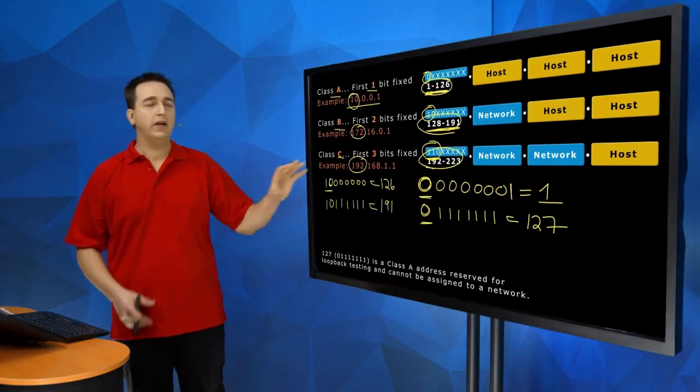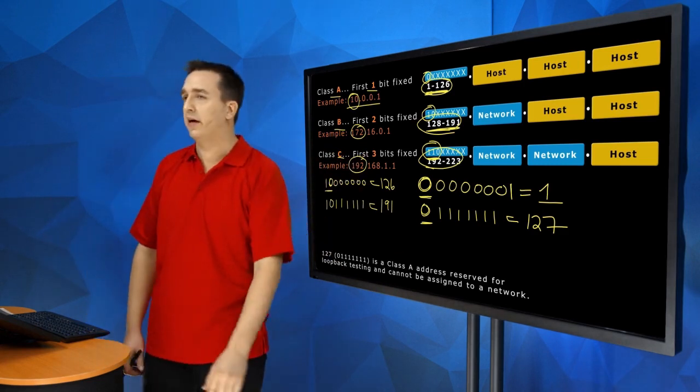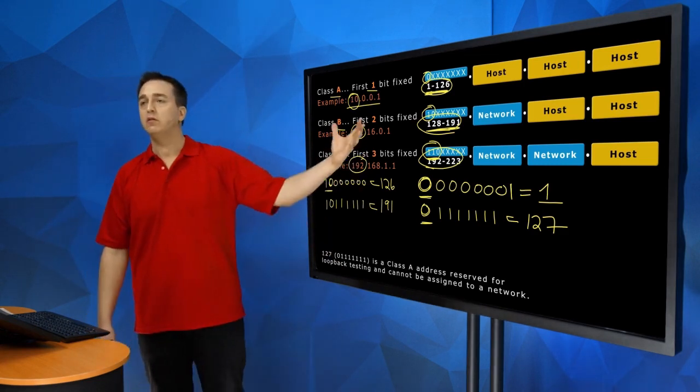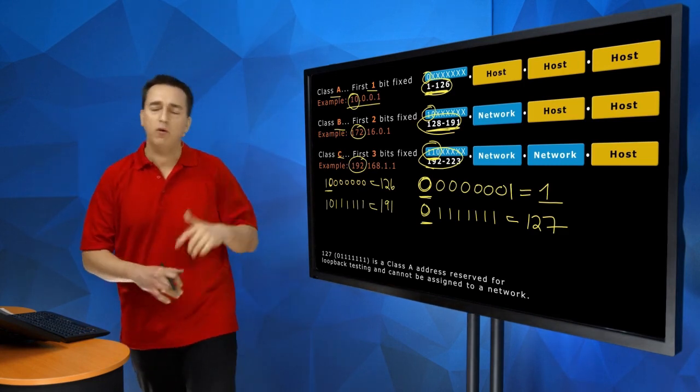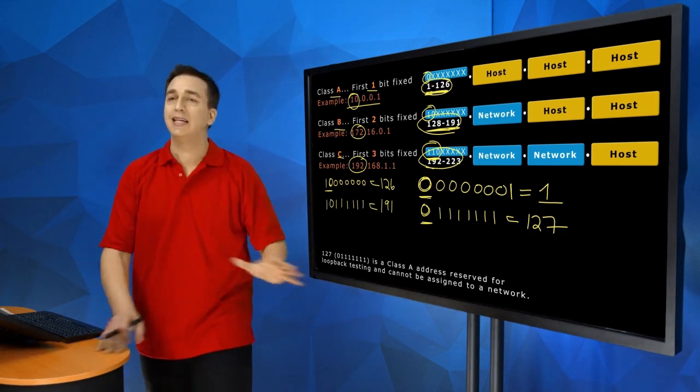So depending on the very first value in the very first octet in decimal, you'll be able to figure out whether it's a Class A, B, or C. And it doesn't matter. You might be thinking right now, hey, well, what about the subnet mask? That doesn't matter.